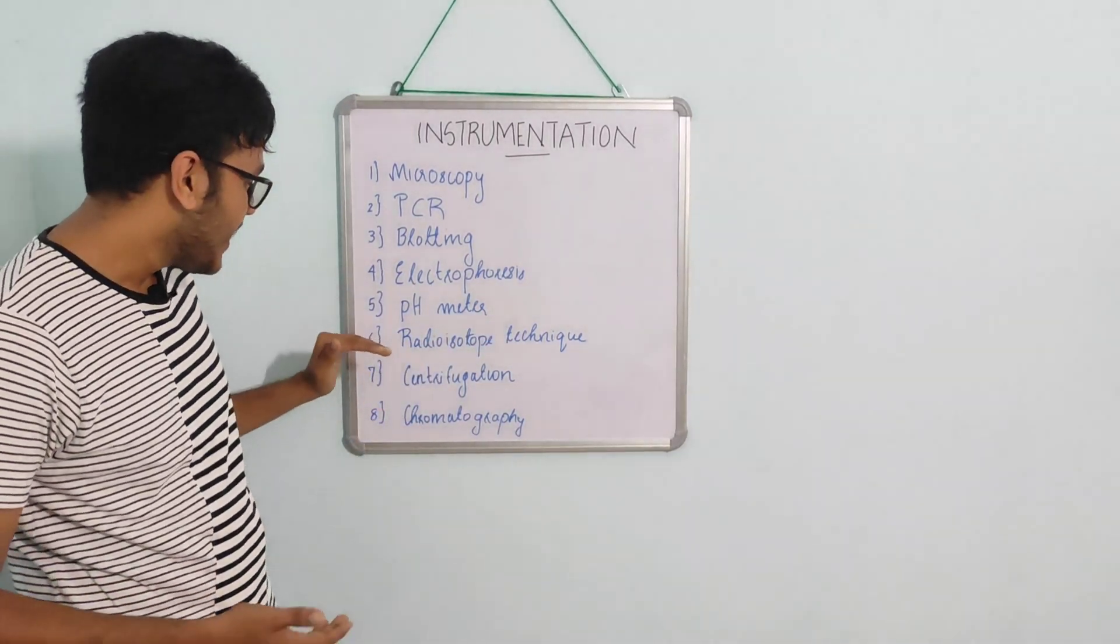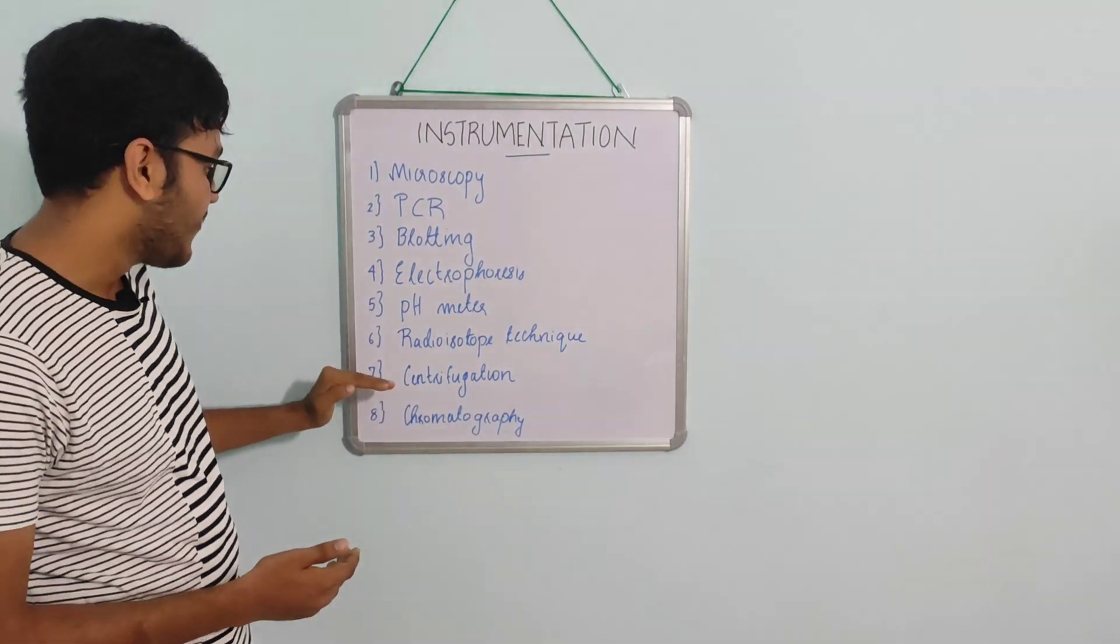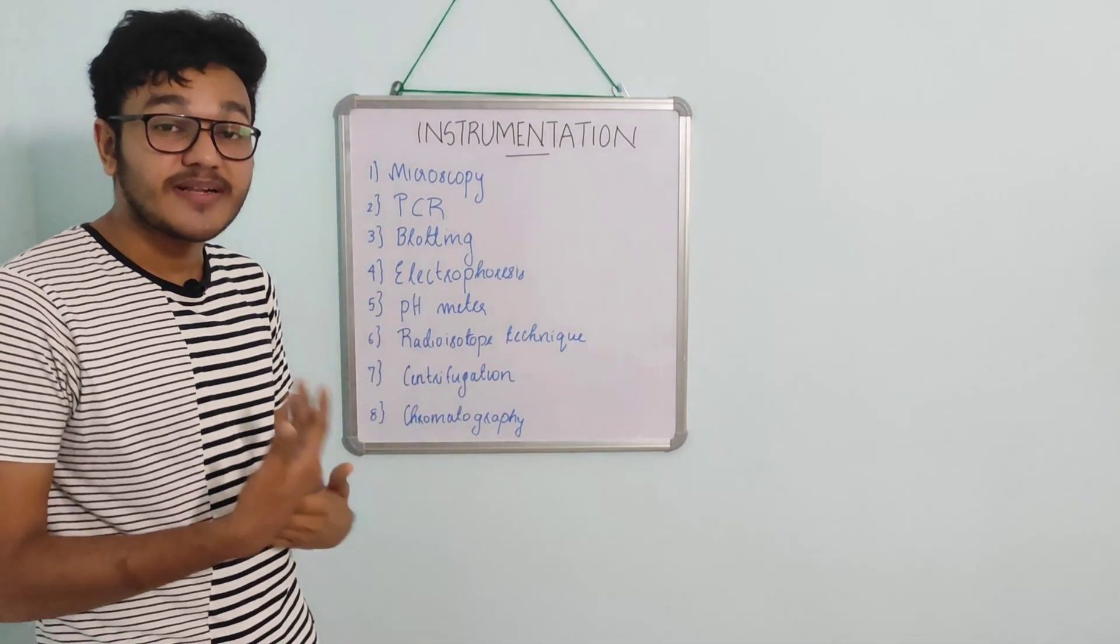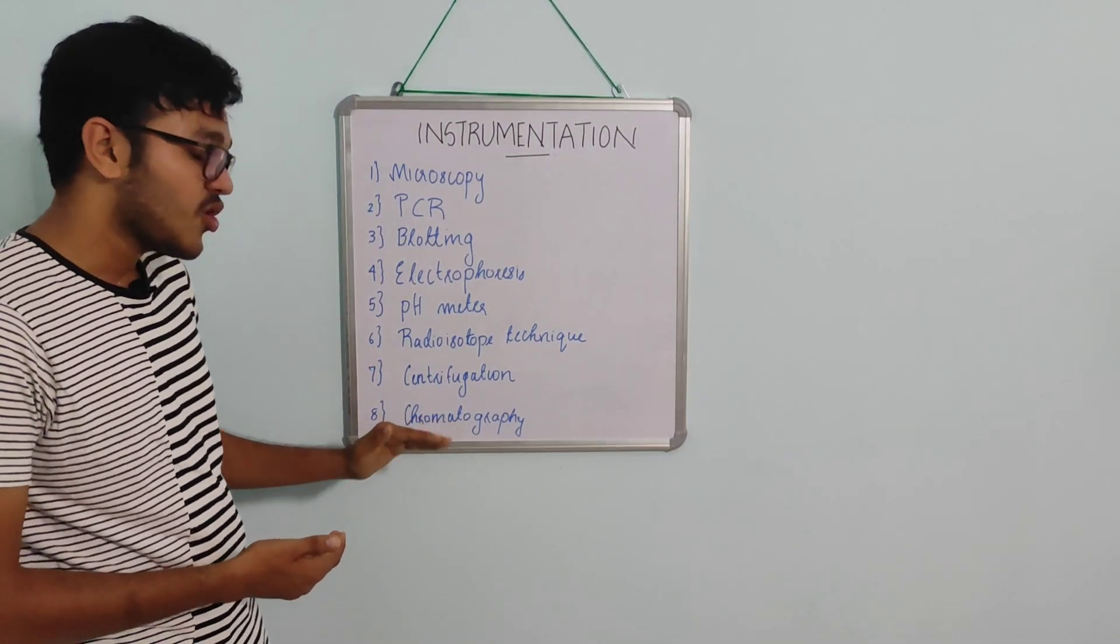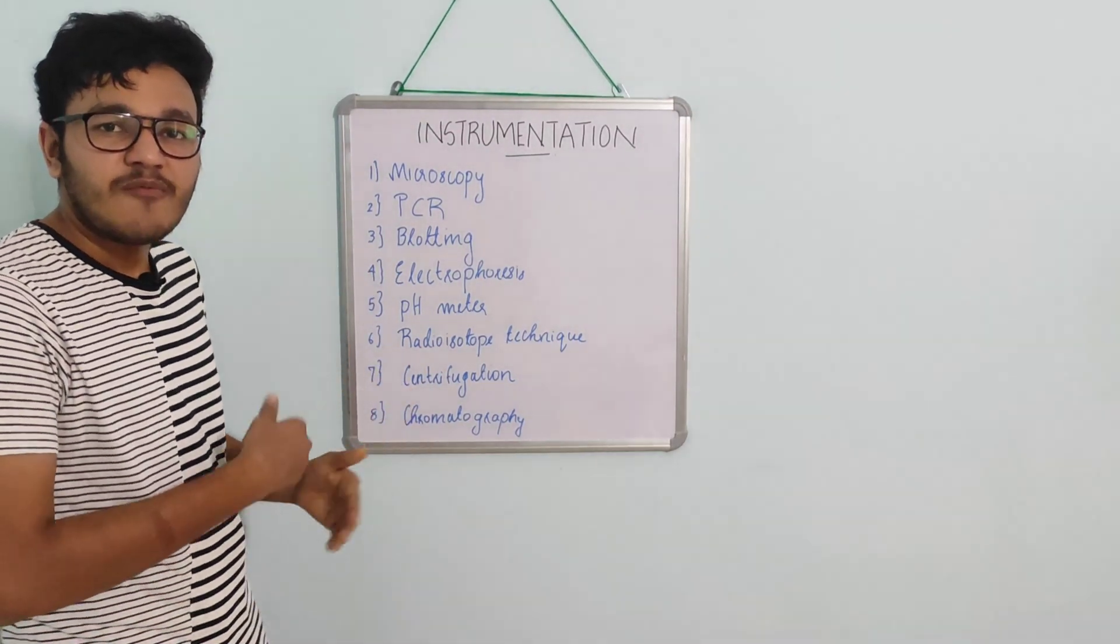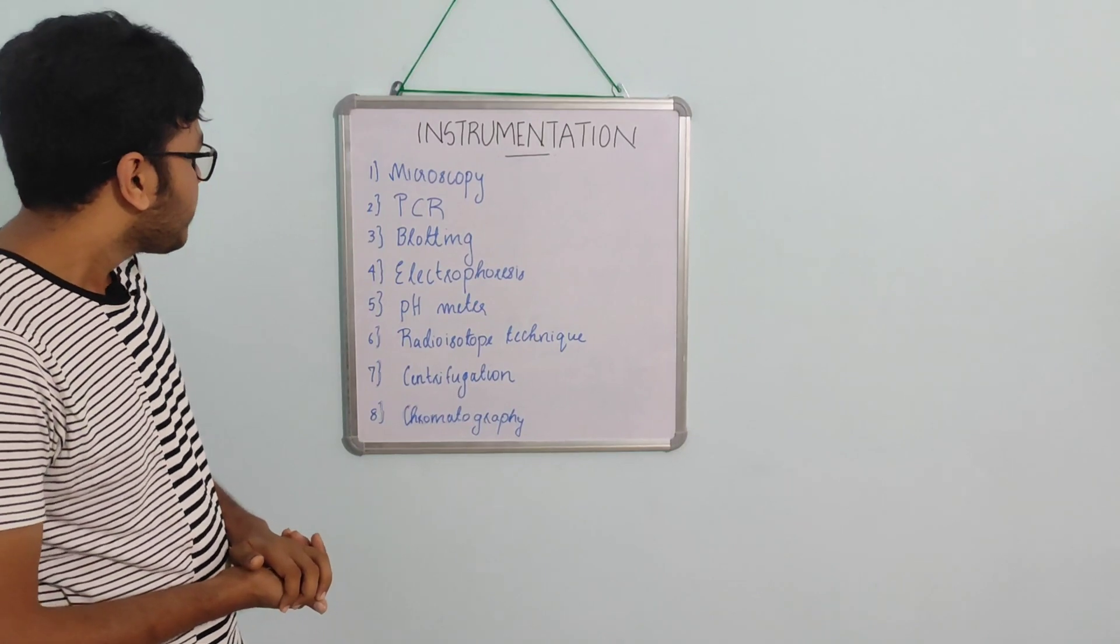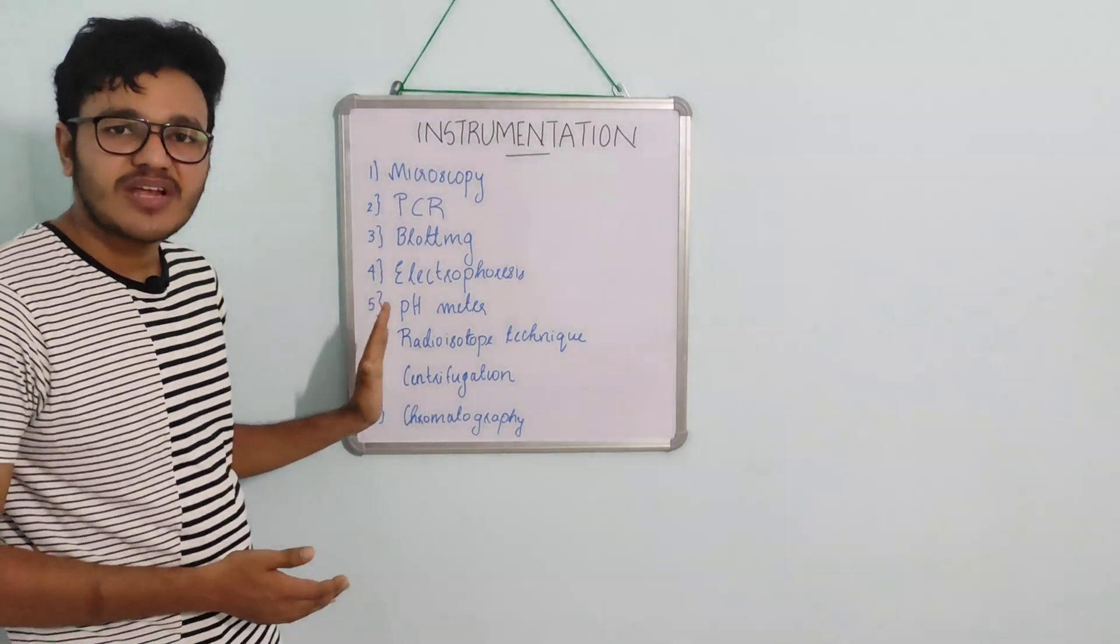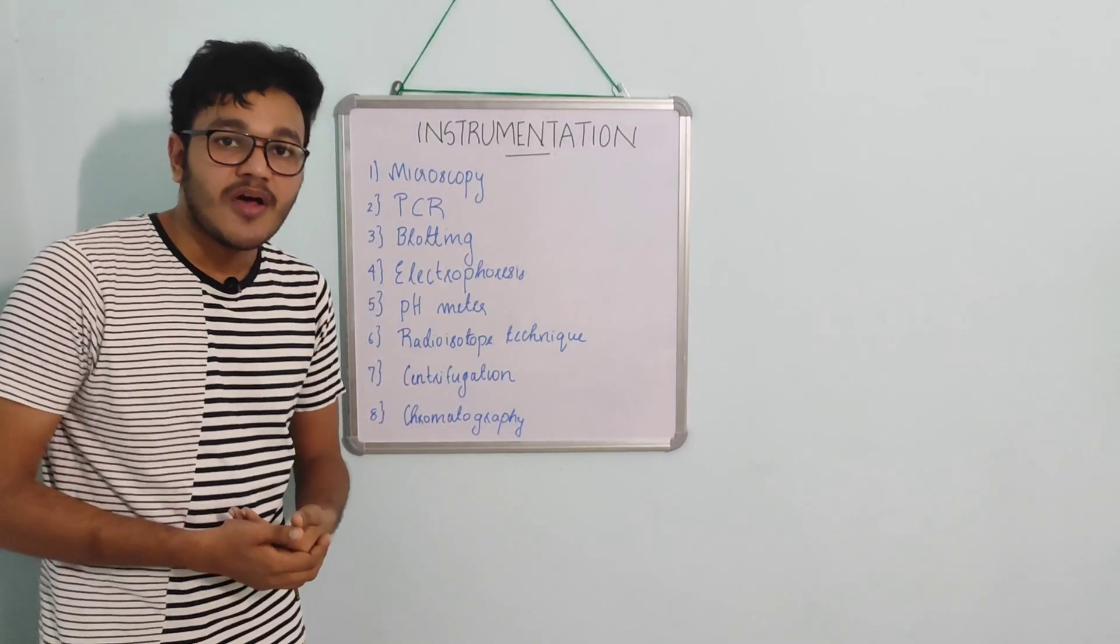The seventh one is centrifugation, which is really important. We have to discuss the various types of centrifugation, its principle, its equations, and its physics. The final one is chromatography. We have to discuss various types of chromatography, the chromatography chamber, its physics and chemistry. So those are the eight topics that we have to discuss in instrumentation related to the entrance exams.